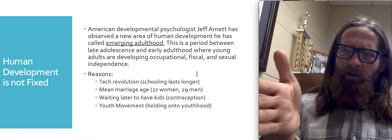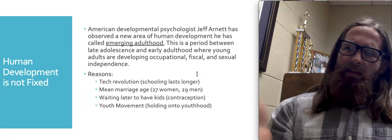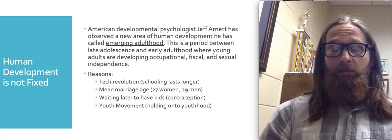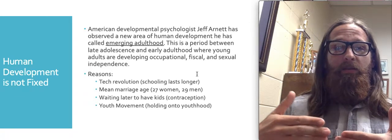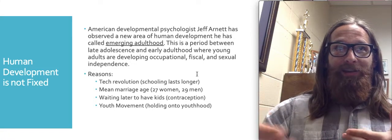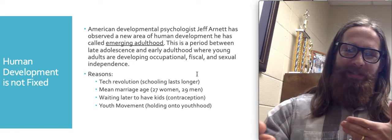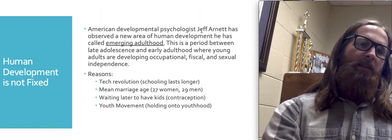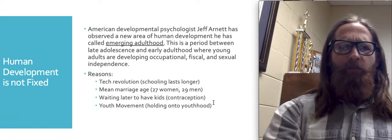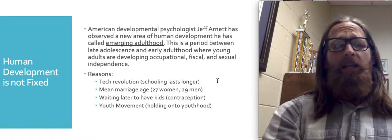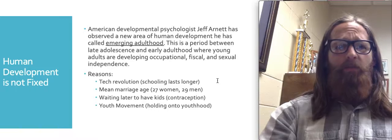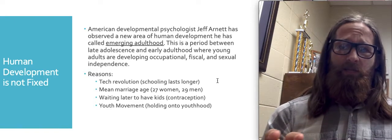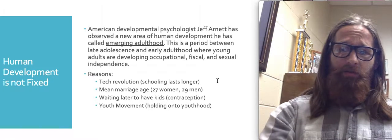It used to be that after high school, in someone's late teens, they entered the labor force. Those sorts of jobs aren't as available anymore, so people have to go to school, and the period at which young adults become fully independent is getting later and later. There's now an almost decade-long span called emerging adulthood, which Jeff Arnett has argued and described in a number of publications. Human development is in flux — it will continue to change as we pass through periods of historical change.